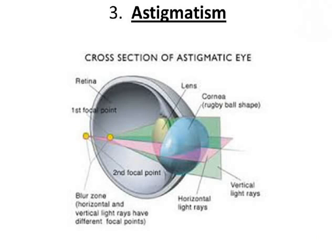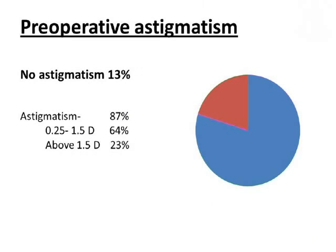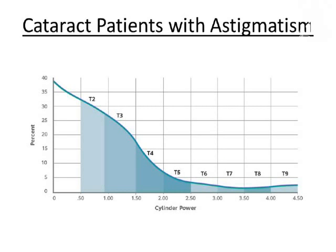Next comes astigmatism. It is estimated that about 30% of patients are astigmatically neutral at the time of cataract surgery. The remaining 87% suffer from some type of astigmatism, out of which 64% have astigmatism between 0.25 and 1.5 diopters and 23% above 1.5 diopters. This is again shown in this graph.